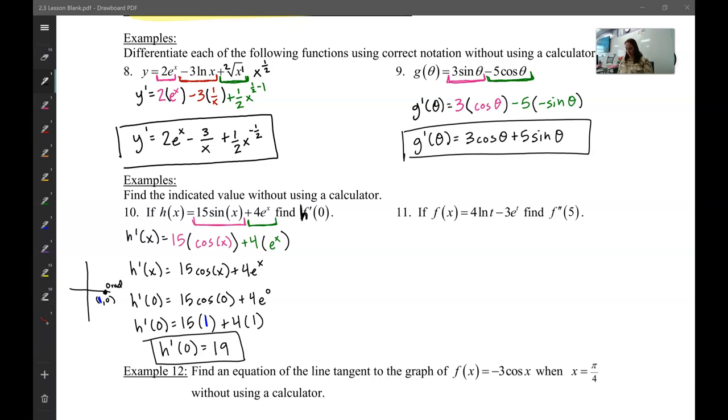And then I plug in 0. Cosine of 0, I can use my unit circle. 0 radians would be right there. And I want the x value. So it's 1. Simplify it out. So I get h prime of 0 would be 19.